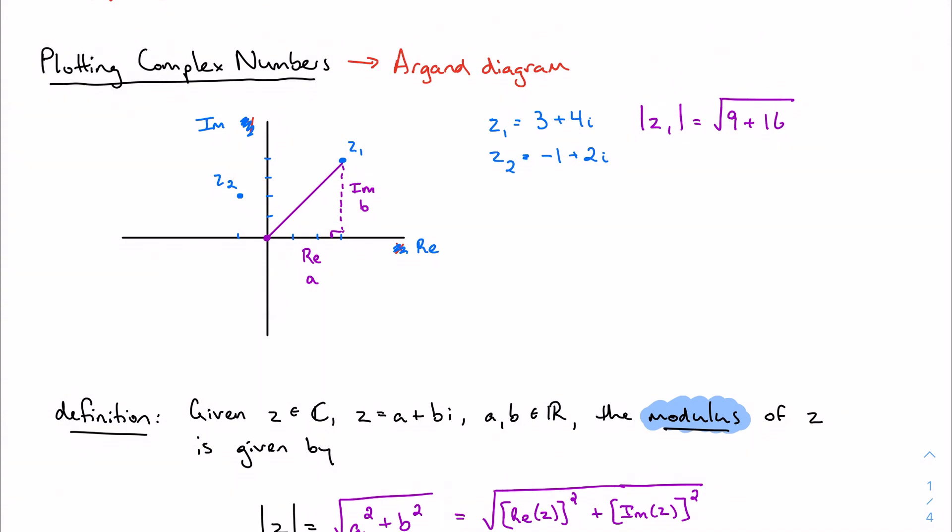If I wanted to find the modulus of z sub 1, I take the real part squared and the imaginary part squared, add them together, and get 5. It's basically the distance formula with a new name—the distance formula 2.0.